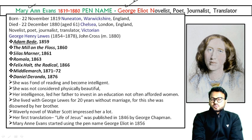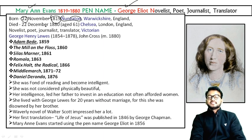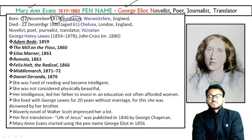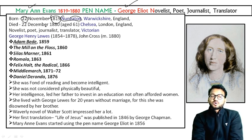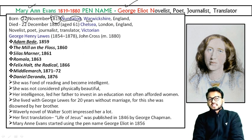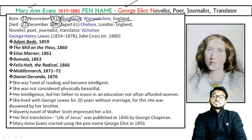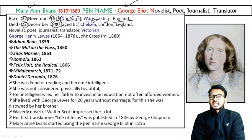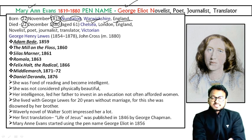She was born in Nuneaton. This is the place where she was born — 22 November 1819. This 1819 year is really important. She was born in Nuneaton, Warwickshire, England. She died on 22 December 1880, at 61 years old, in Chelsea, which is part of London, England.